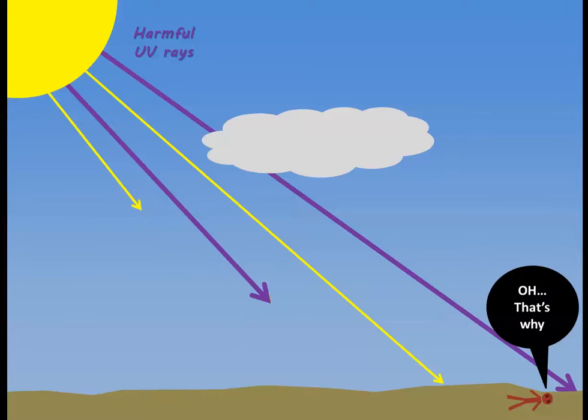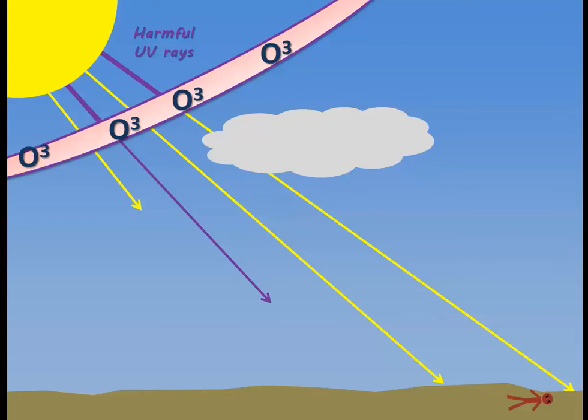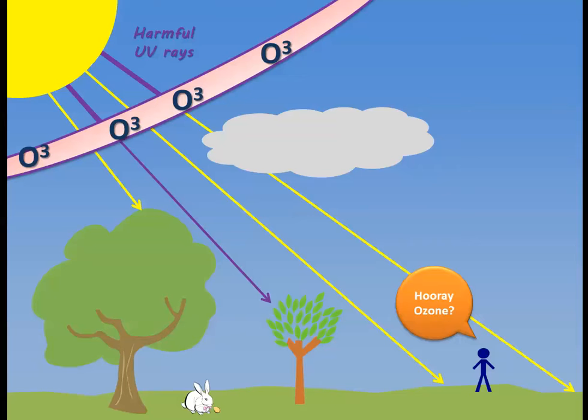However, with an ozone layer high in the atmosphere, most of these harmful UV rays are absorbed. This absorption also causes the ozone layer to heat up and plays a key role in the temperature structure of our atmosphere. That's right, hooray ozone!